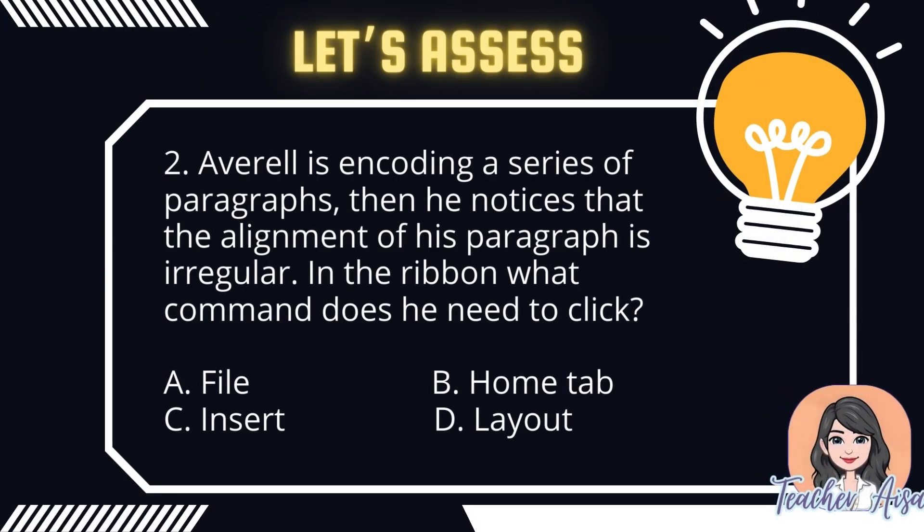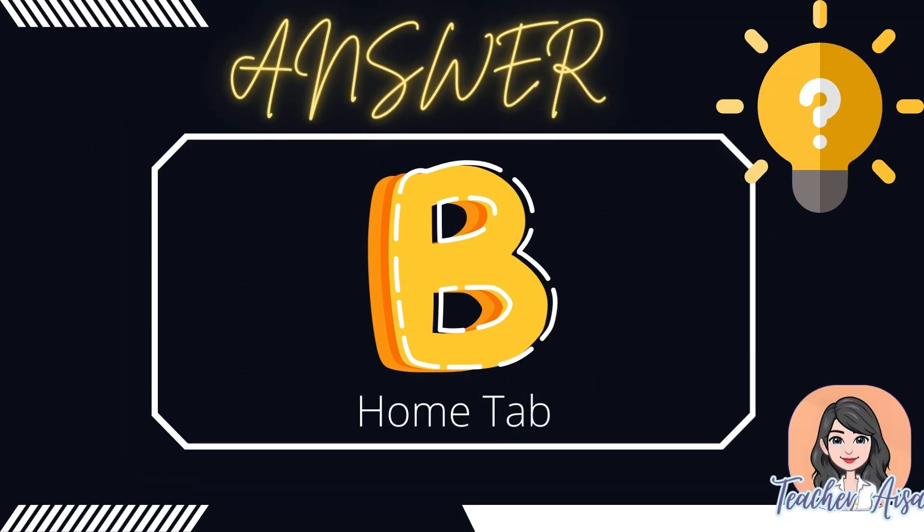Question 2: Aave Rail is encoding a series of paragraphs. Then he notices that the alignment of his paragraph is irregular. In the ribbon, what command does he need to click? A. File. B. Home tab. C. Insert. D. Layout. Correct! It's letter B, Home tab.